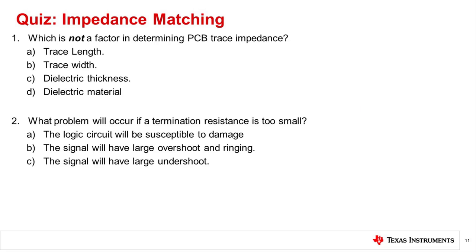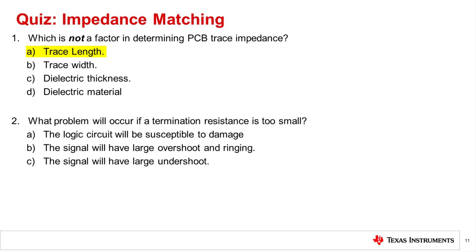Question 1: Which is not a factor in determining PCB trace impedance? The correct answer is A, trace length. The trace width, dielectric thickness, and dielectric materials are the only factors that are needed to set the impedance.